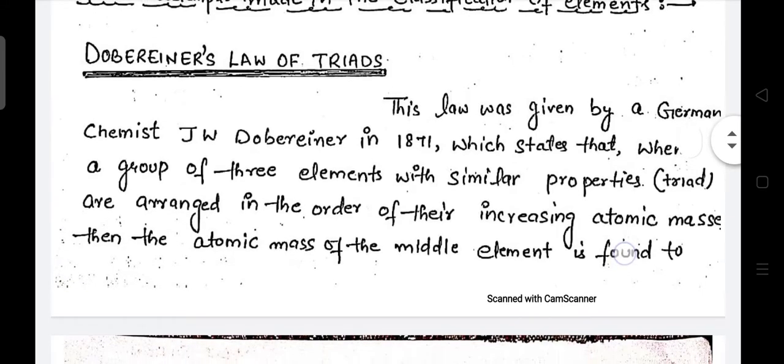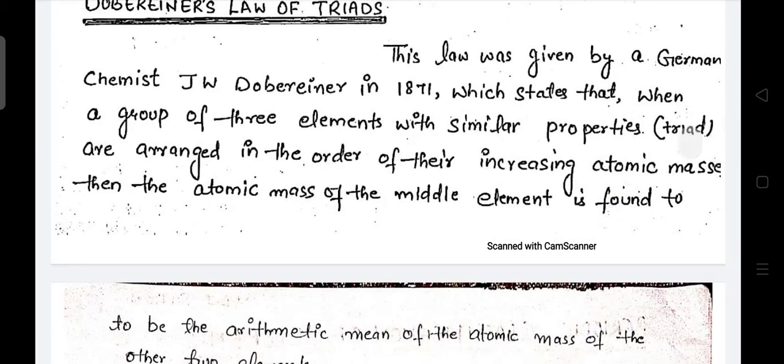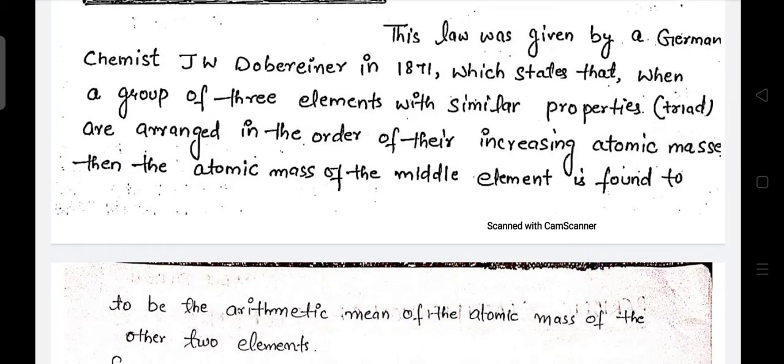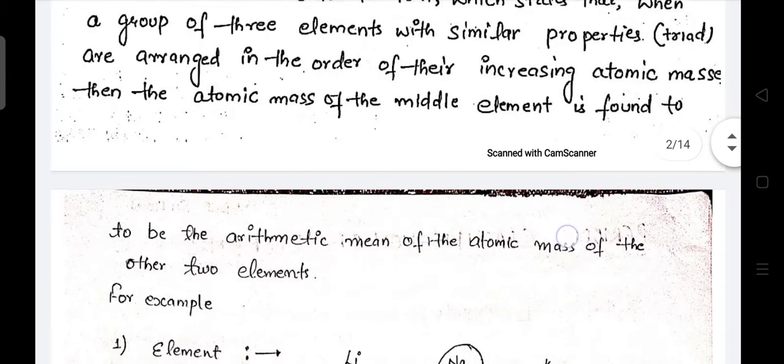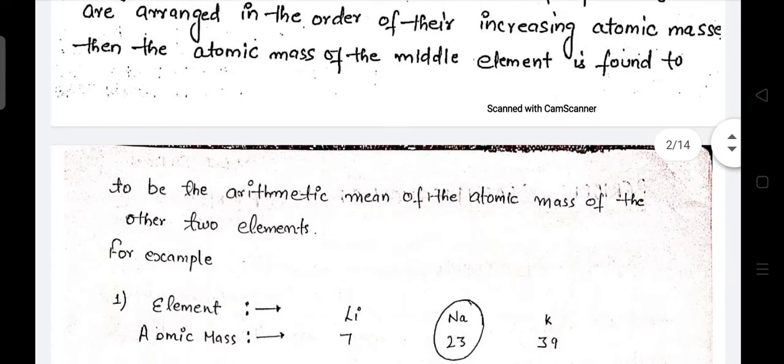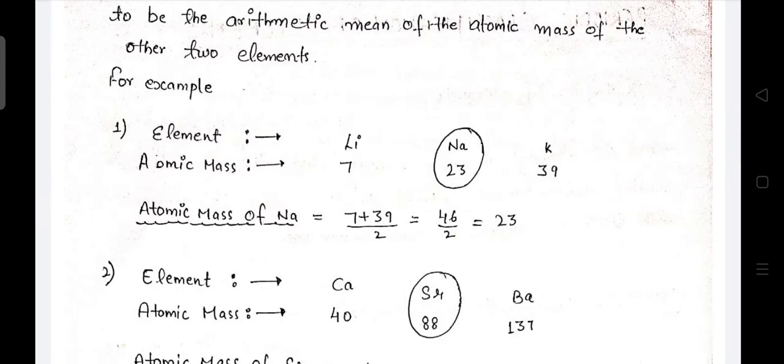For an example, we took three elements: lithium, sodium, and potassium. When we arranged them in increasing atomic mass order, if we calculate the arithmetic mean of the first and last element - 7 plus 39 upon 2, that becomes 76 upon 2 equals to 23. This equals the mass of the middle element, which is sodium's mass of 23.